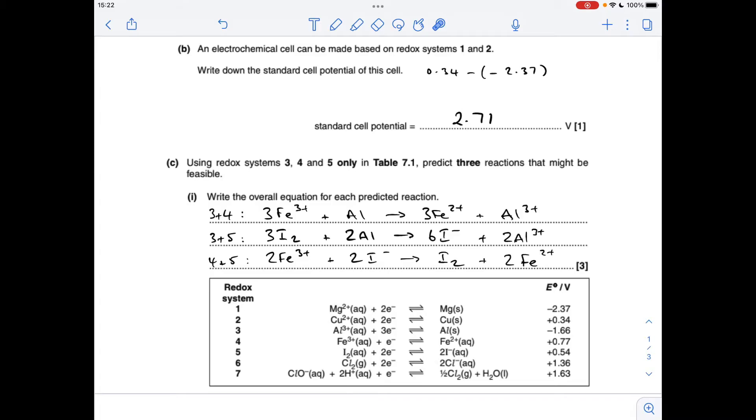Systems 3 and 5, so we're comparing -1.66 with 0.54. Again, this one's going to go forwards, the aluminium one's going to go backwards. This time the electrons are 2 and 3, so we need to multiply this equation by 3, this one by 2, which gives us that.